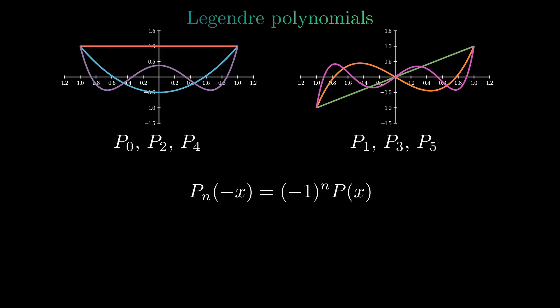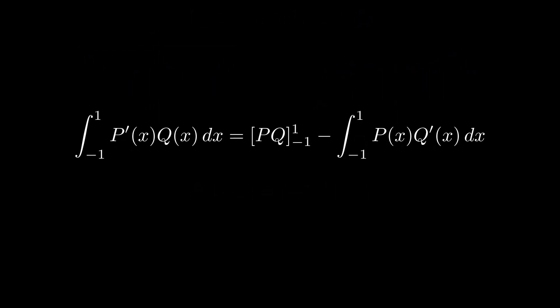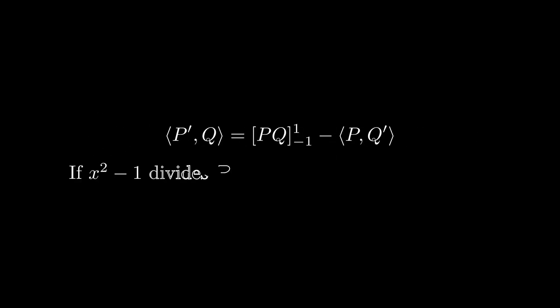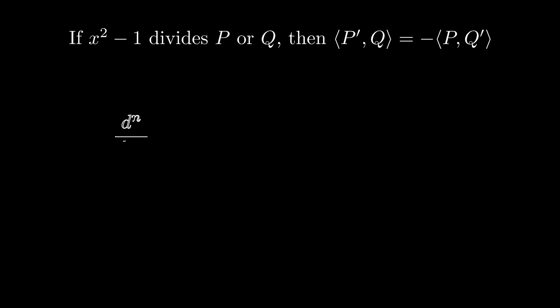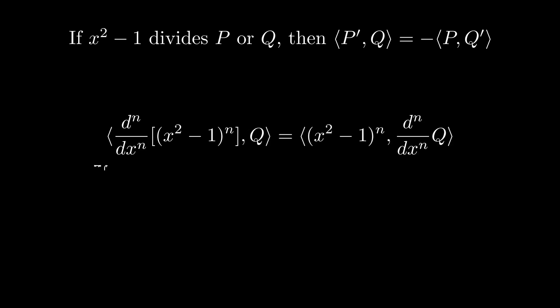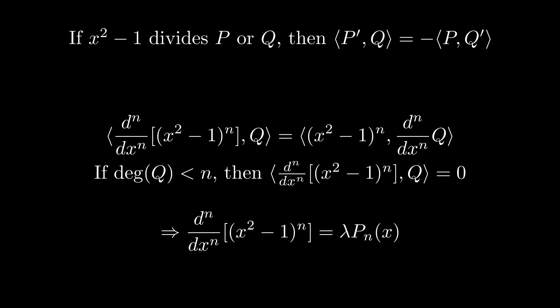Now we want to derive some more interesting properties. Using integration by parts, we get a formula for the inner product. Especially if x squared minus 1 is a factor of either p or q, we can move the derivative to the other side in the inner product by changing the sign. If we want to use this property repeatedly, we may look at a polynomial of degree n. If we take the inner product of this polynomial with some polynomial q, we can move all derivatives from one side to the other. If the degree of q is smaller than n, the nth derivative of q is zero, so the inner product is zero. By the properties of the Legendre polynomials, this means that the nth derivative of x squared minus 1 to the nth power is a multiple of the nth Legendre polynomial.